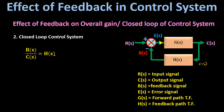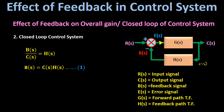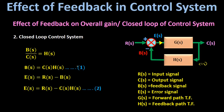From this we get the feedback signal B(s) = C(s) × H(s). Let this be equation number one. The error signal is equal to the input signal minus the feedback signal, so E(s) = R(s) − B(s). Substituting equation one, we get E(s) = R(s) − C(s) × H(s). Let this be equation number two.